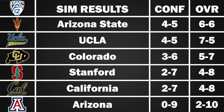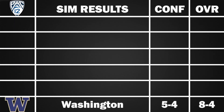Moving to the top half: Washington goes 8-4, 5-4 in conference — a disappointment for a team in many preseason top tens. They beat Boise State, Tulsa, Michigan State, Arizona, Arizona State, Stanford, Oregon State, and Washington State, but lose to Cal, Oregon, USC, and Utah. That Cal loss was a head-scratcher, but it's not crazy to think Washington could lose four games.